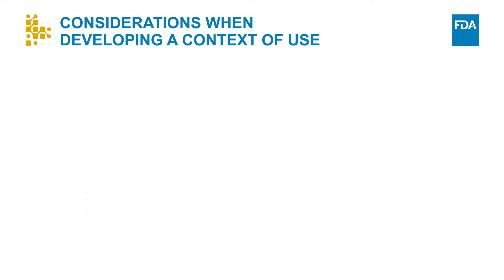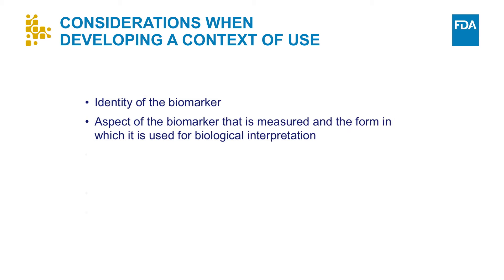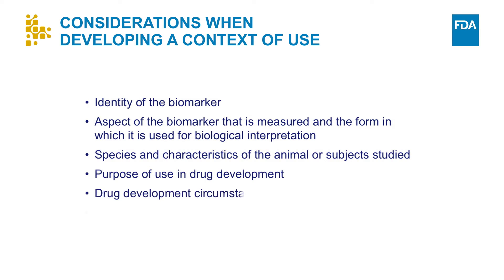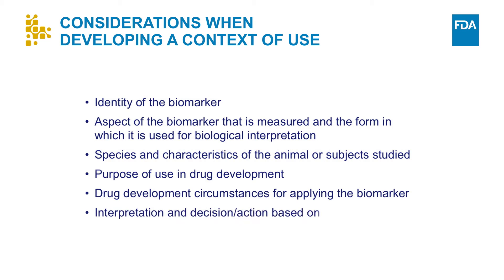Things to consider when developing a context of use include: the identity of the biomarker; the aspect of the biomarker that's measured and the form in which it's used for biological interpretation; the species and characteristics of the animal or subject studied; the purpose of use in drug development; the drug development circumstances for applying the biomarker; and the interpretation and decision or action based on the biomarker. Not all of these are relevant for every biomarker, but they should be evaluated for relevance to the biomarker being developed.